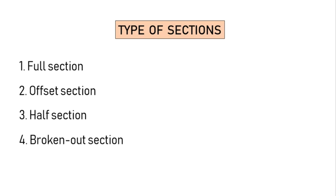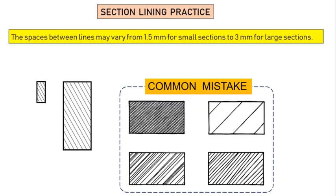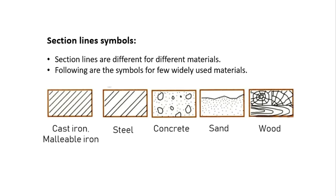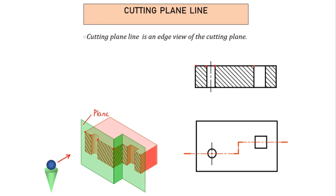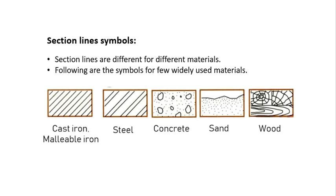The types of sections are: full section, offset section, half section, and broken out section. Section lines are different for different materials. For cast iron and steel, you can see there is a larger equal spacing between two lines.